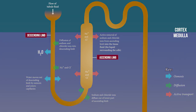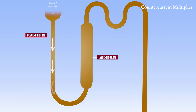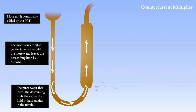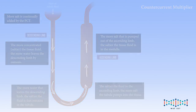The loop of Henle is known as a counter-current multiplier. The term counter-current refers to the fact that the fluid flows in opposite directions in the two sides of the loop — down one side and up the other. Also, take note of the constant removal of sodium and other ions from the ascending side and their replacement from the proximal convoluted tubule on the descending side. This brings us to the final section which looks at the distal convoluted tubule and the collecting duct.